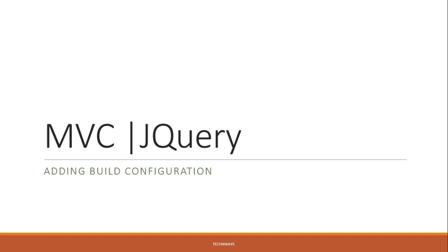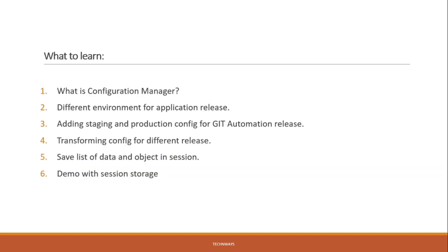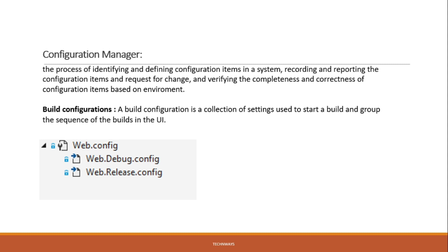We will see how to create different configurations for different types of environments — what is the Configuration Manager, how we can create releases for different environments, how to create staging and production environments for git migration, and how we can transform those environments in a solution. Whatever build configuration we create, we create it through the Configuration Manager in Visual Studio.